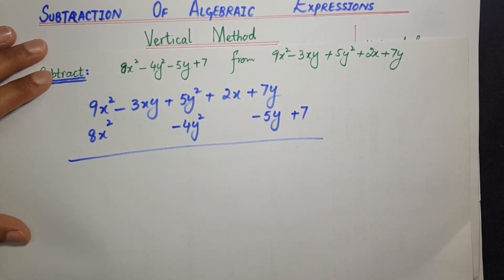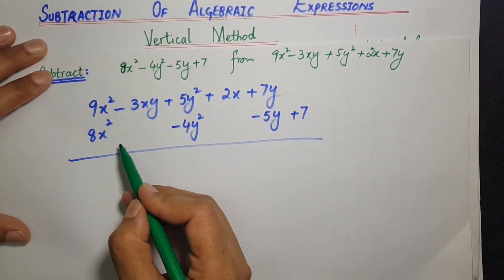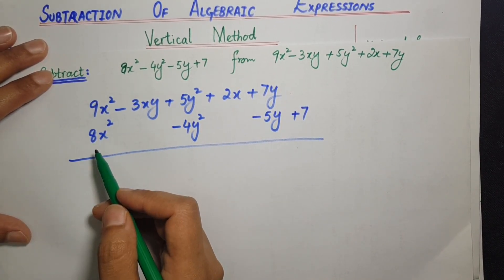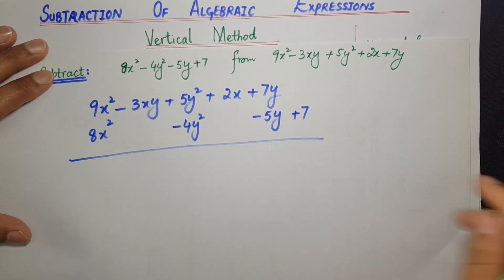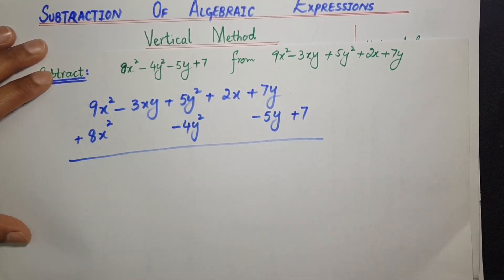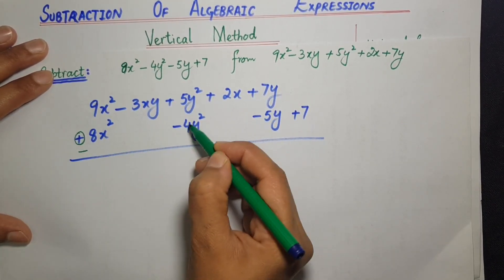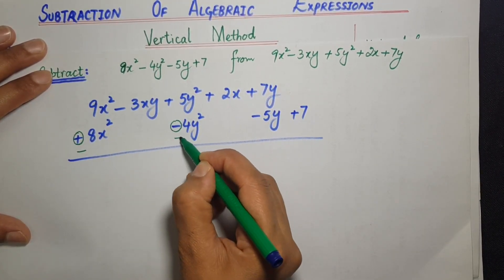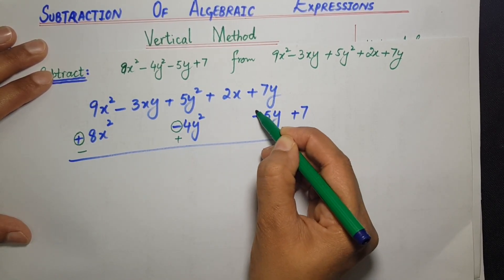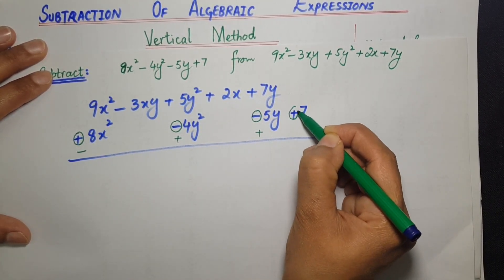اب again ان کی subtraction کے لیے ہم second expression کے additive inverse کے ساتھ plus کریں گے — second expression کی terms کے sign change کریں گے۔ جیسے یہاں plus تھا تو minus کر دیں گے۔ یہاں minus تھا تو plus کر دیں گے۔ یہاں بھی minus تھا تو plus کر دیں گے۔ یہاں بھی plus تھا تو minus کر دیں گے۔